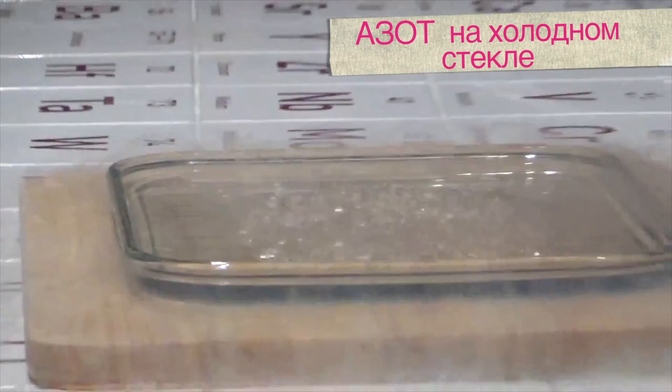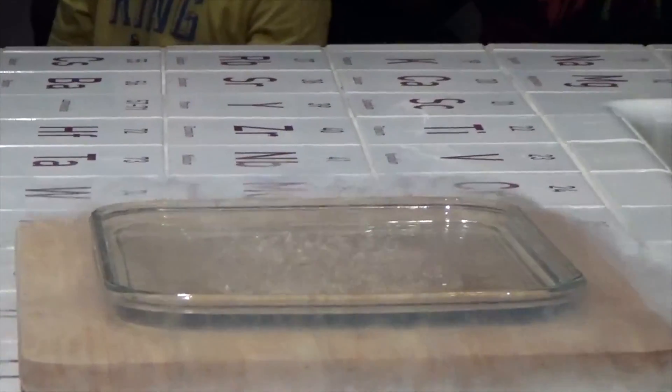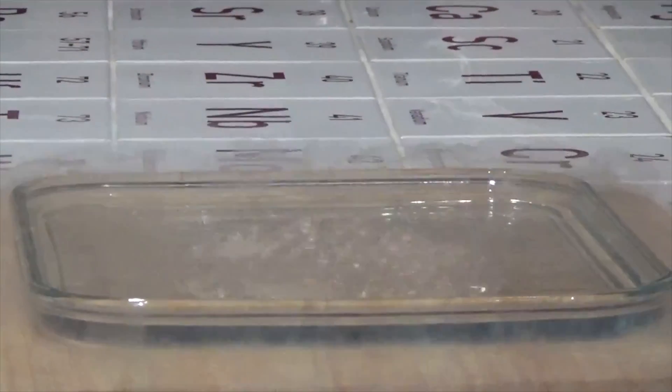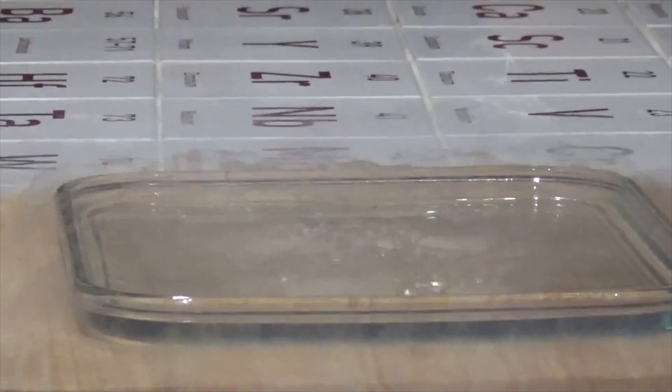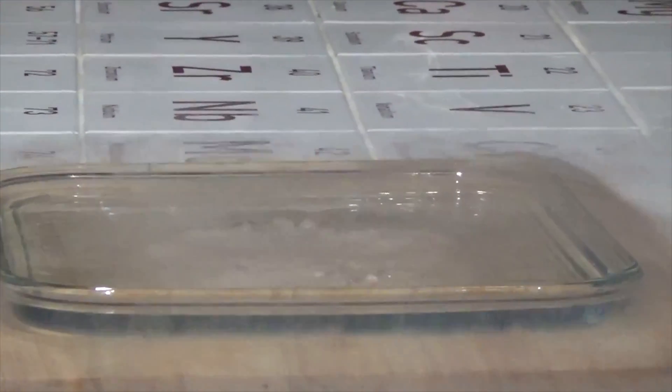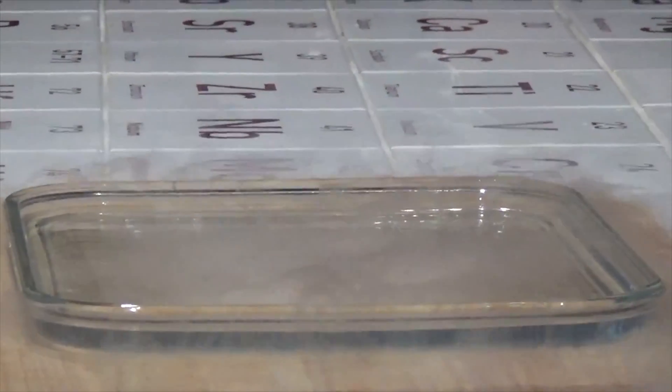Because the liquid nitrogen is so cold that that cold glass tray is hot enough by comparison to make it boil. It actually boils at minus 196 degrees Celsius. And it's almost 300 degrees colder than the temperature water boils at.